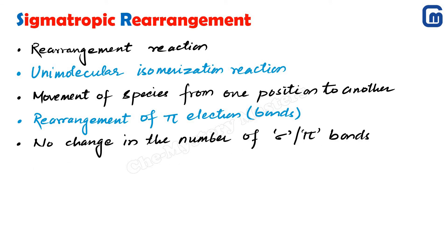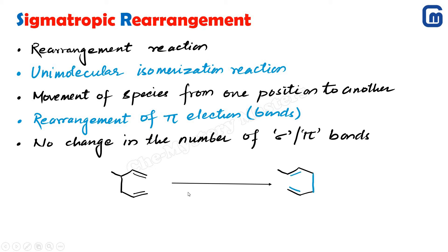An important point distinguishing sigmatropic rearrangement from electrocyclic and cycloaddition reactions is that there is no change in the total number of sigma and pi bonds. In electrocyclic and cycloaddition reactions we saw changes in sigma and pi bond counts, but here no such change occurs. The example shows a molecule with a double bond and a single bond; after rearrangement a new product is formed, with the blue bonds indicating newly formed bonds.